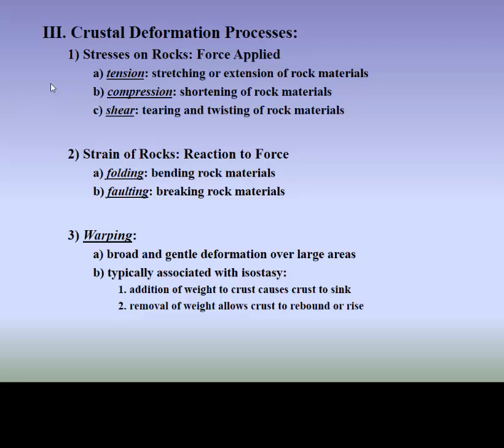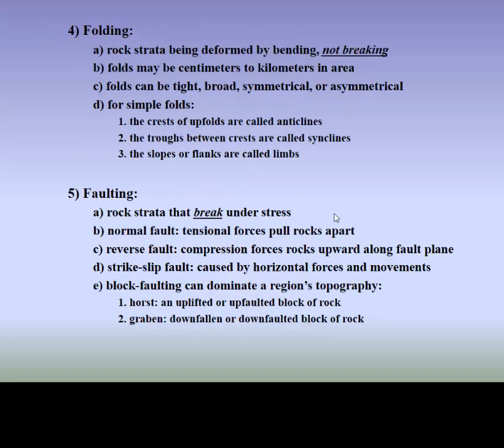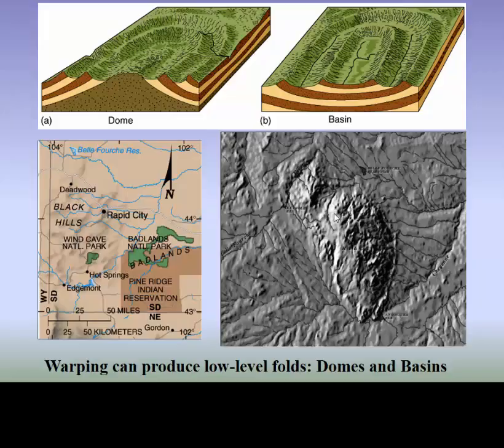We have folding and faulting. A fault is basically the breaking of a rock on which we have movement on both sides. Warping is the gentle deformation of rock strata. These layers break under stress. We have a normal fault, which is when tensional forces pull rocks apart — kind of like divergent — reverse, upward, and then strike-slip across, kind of like transform plate boundaries.